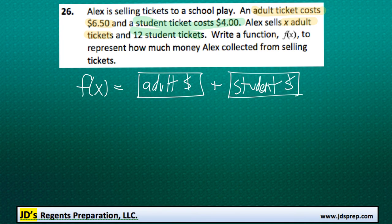That's kind of our goal here. Now, the amount of money that he's going to get from the adult tickets is the price, which is $6.50, and we're going to multiply that by the amount of adult tickets sold, which is represented by our variable X.